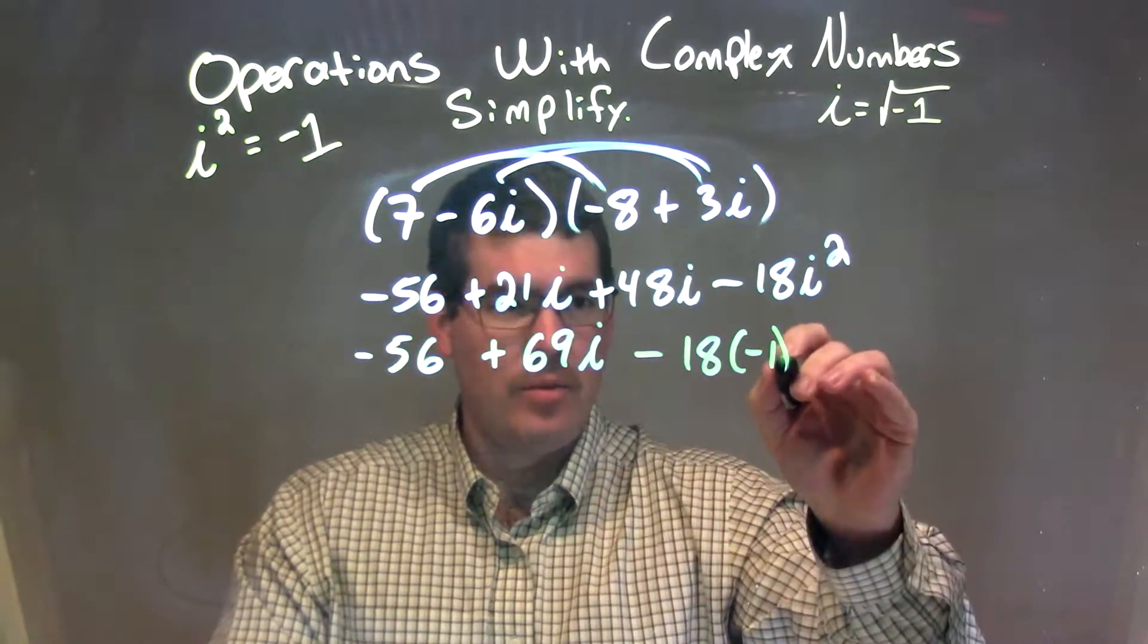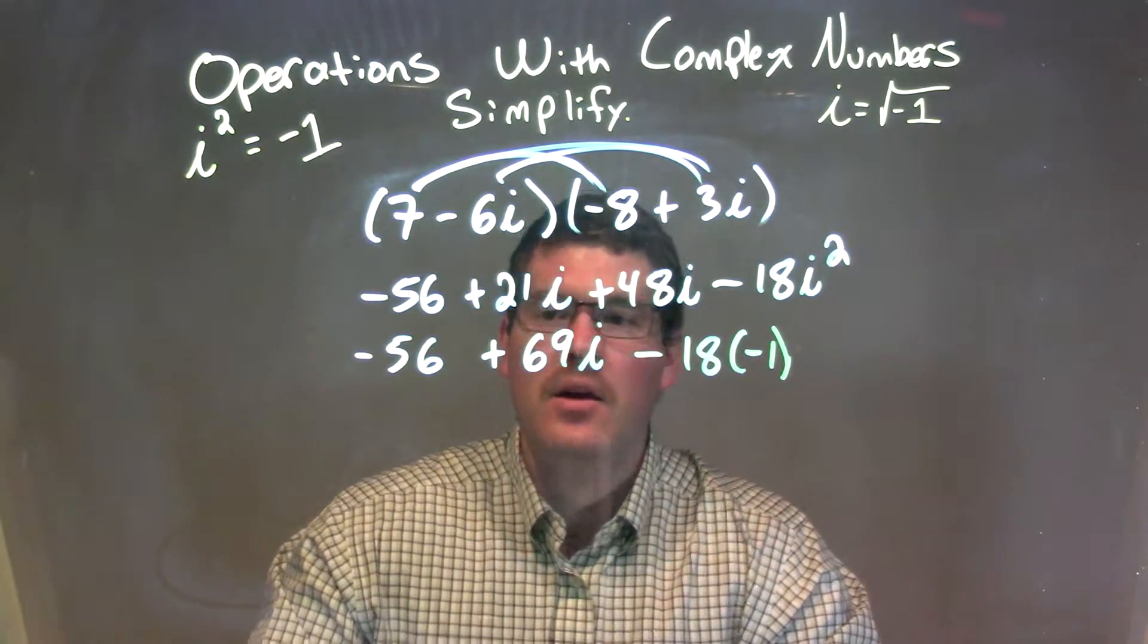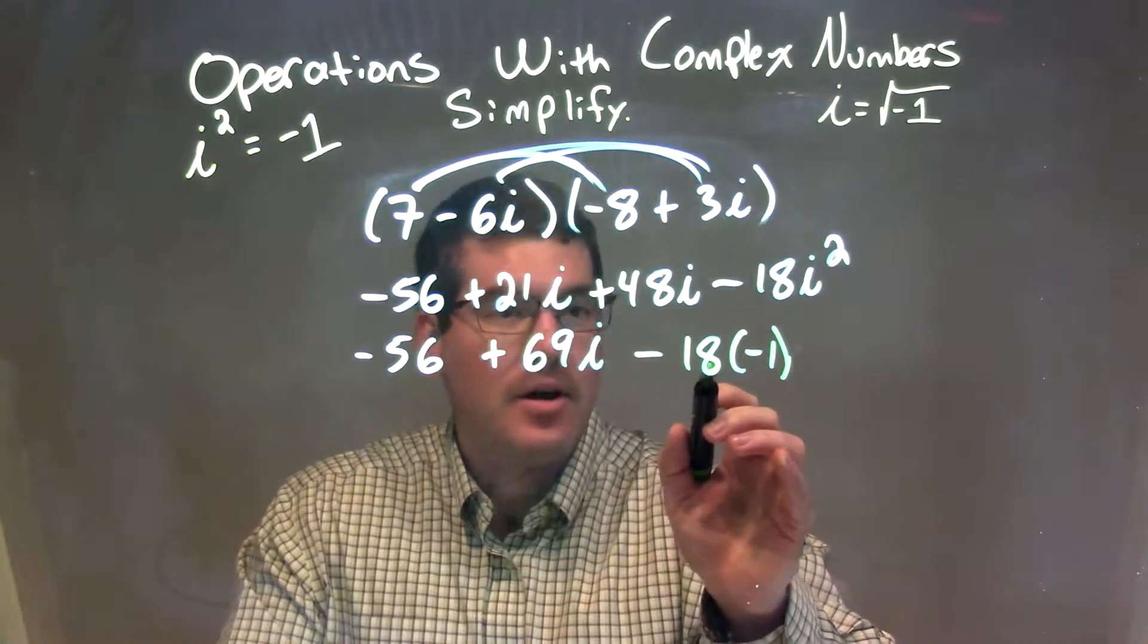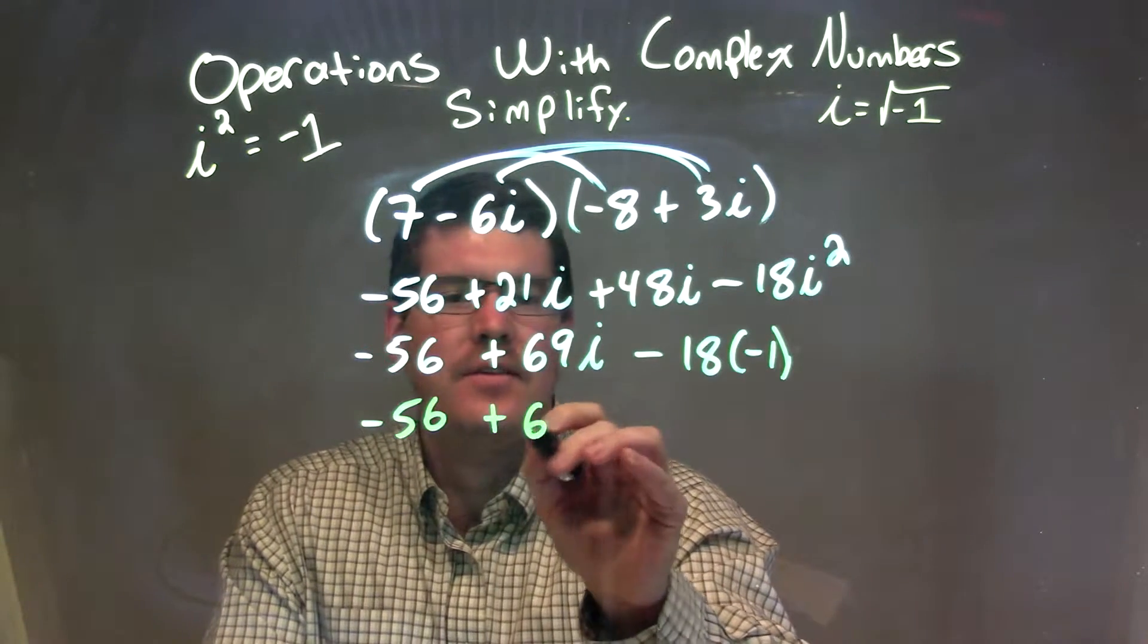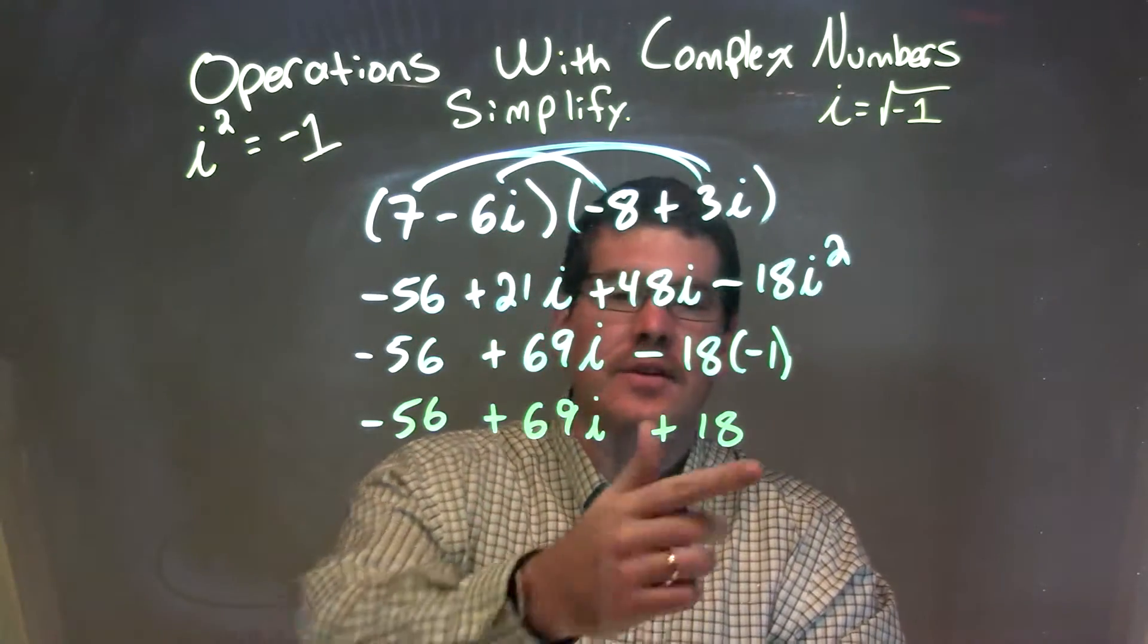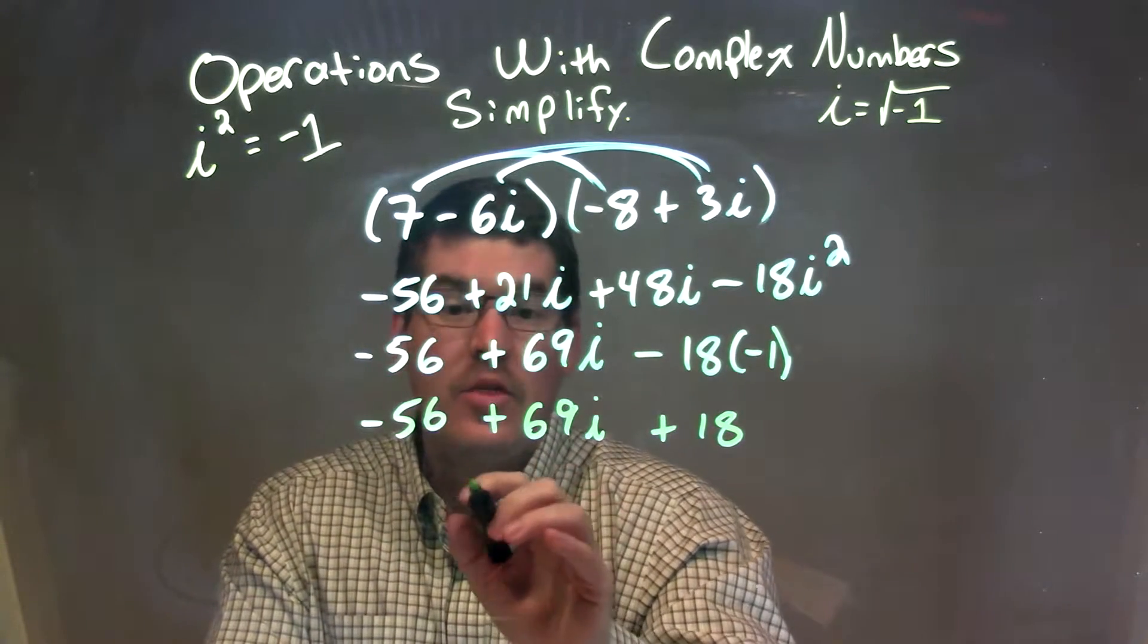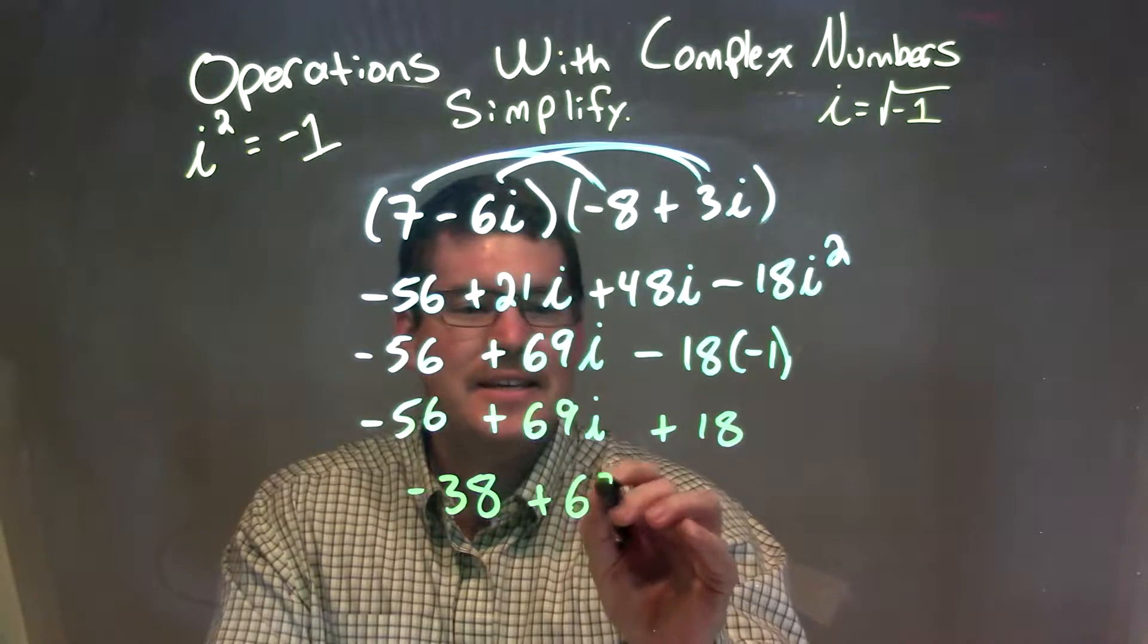This is where it's different than a normal variable. i squared becomes negative 1. So subtracting 18 times negative 1 is like adding positive 18. We have negative 56 plus 69i plus 18. Combine negative 56 and positive 18 to get negative 38 plus 69i.